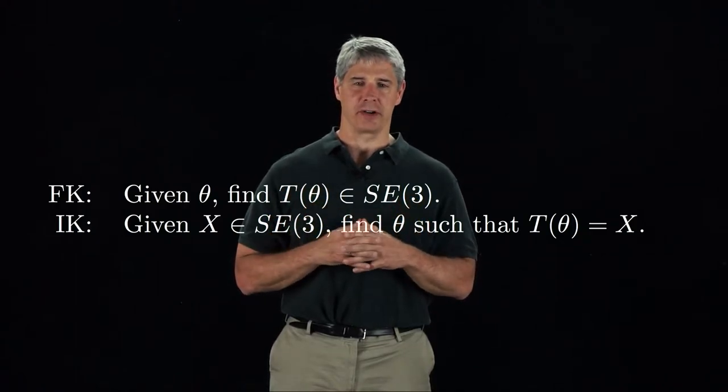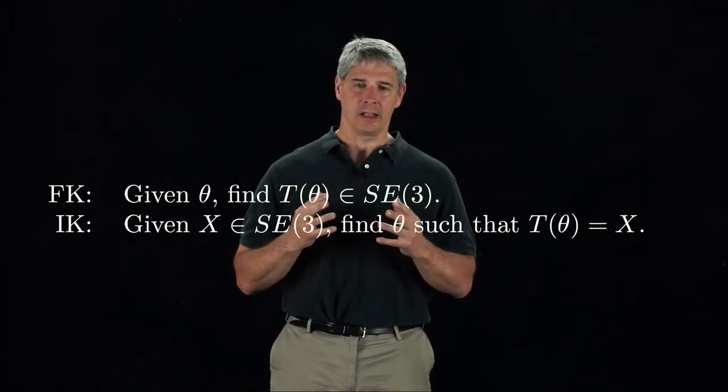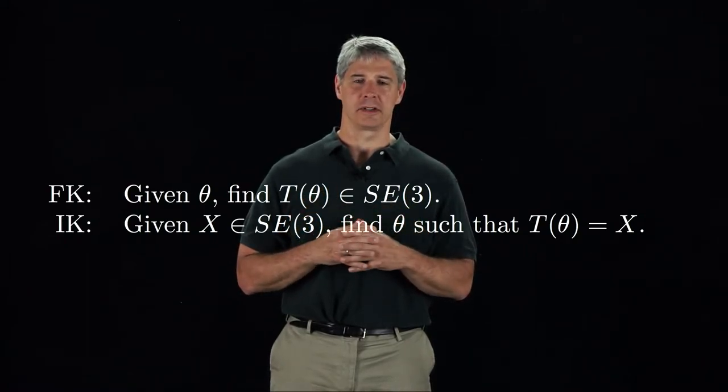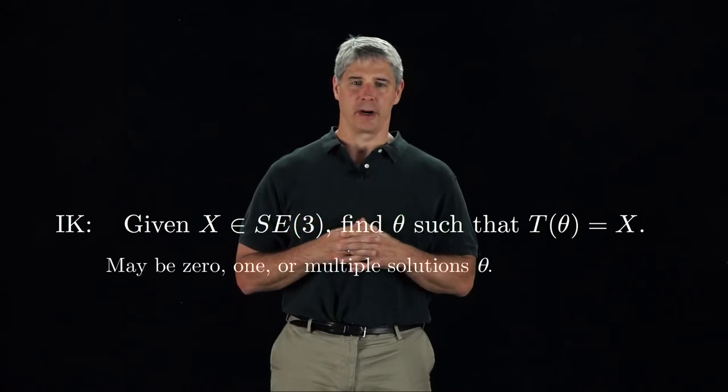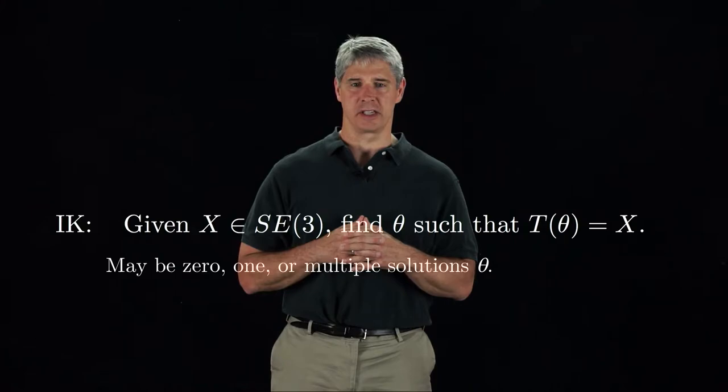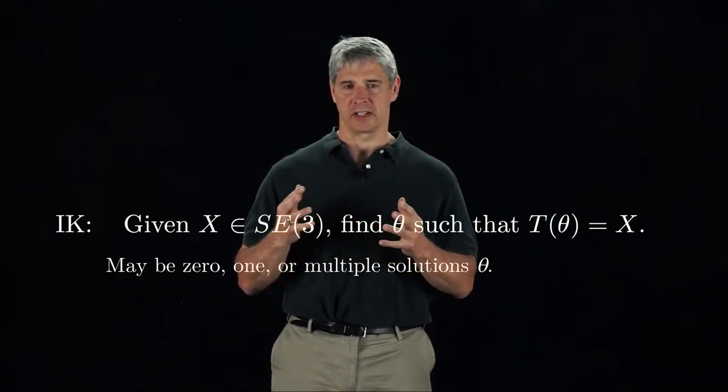Inverse kinematics is trickier than forward kinematics. Unlike the forward kinematics, which has a unique end effector configuration for a given set of joint values, the inverse kinematics problem may have zero, one, or multiple solutions for the joint values theta given the desired end effector configuration. We'll see an example of this in a moment.